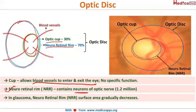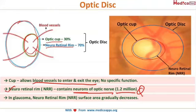The neuro-retinal rim is the most important part because it contains the neurons of the optic nerve, hence the name neuro-retinal rim. It has about 1.2 million neurons — please remember this number, it is very frequently asked. The cup occupies only 30% of the optic disc whereas the neuro-retinal rim occupies 70%.